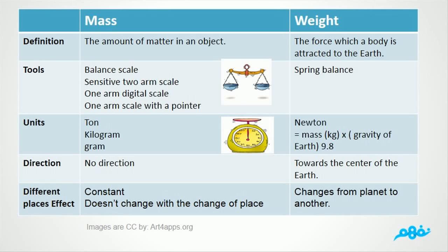Number 1: Definition. Mass is the amount of matter in an object. Weight is the force which a body is attracted to the earth. Number 2: Tools. For mass: balance scale and sensitive two-arm scale. For weight: spring balance.